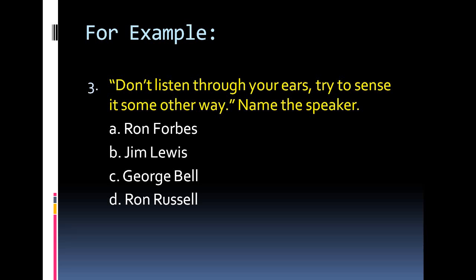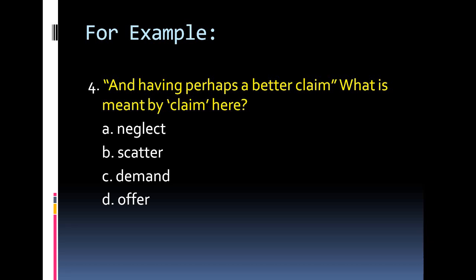These are the kinds of questions coming from your literature and grammar sections. Another example: 'And having perhaps a better claim — what is meant by claim here?' This is from the poetry section, 'The Road Not Taken.' Word meanings are important from any chapter in your syllabus. The options are: neglect, scatter, demand, offer. The answer is option C — demand.